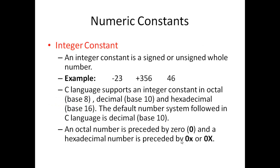Numeric Constants can further be divided into two categories. First one is the integer constant, and integer constant is either a signed or unsigned whole number. So it can be minus 23 or 356 or 46 and so on. C language supports integer constants in octal, decimal and hexadecimal only.